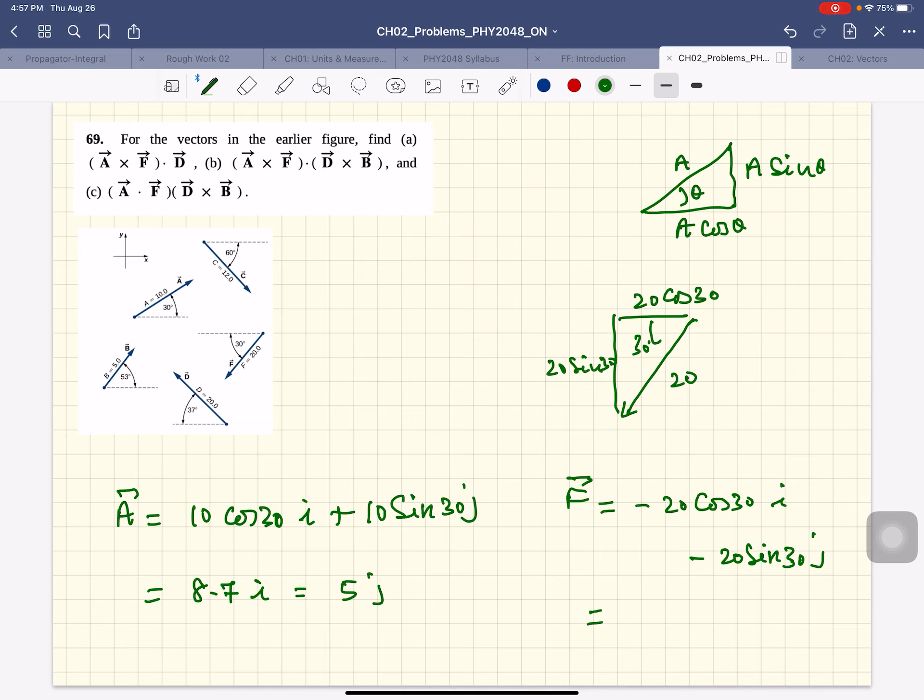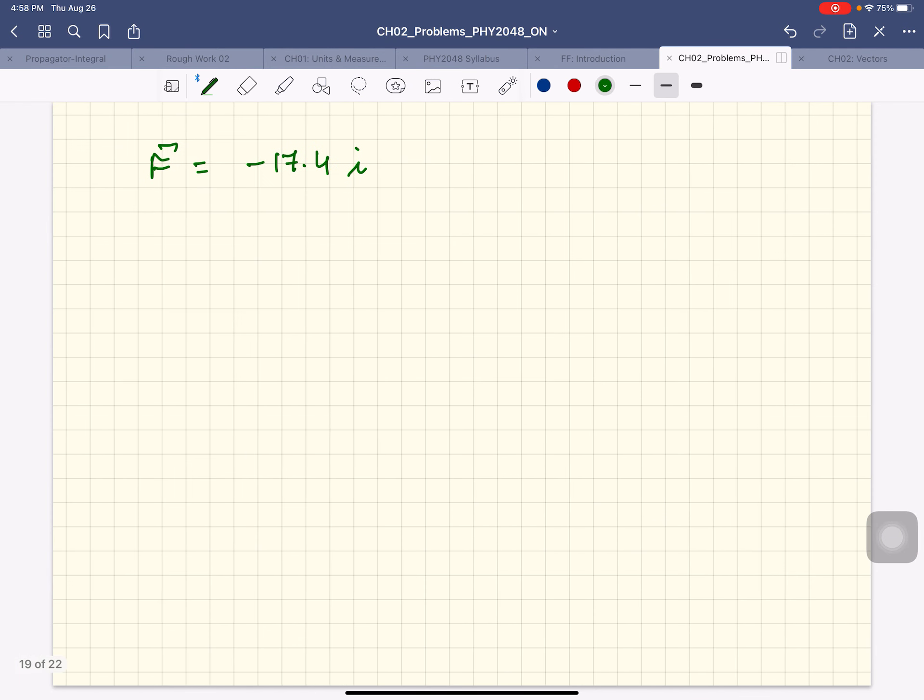You could have measured the angle from the x-axis and then the sine would automatically come out right. Plus 20 sine 210 j, and you can test it out. Anyway, F turns out to be negative 17.4 i and the y component will turn out to be negative 10 j.